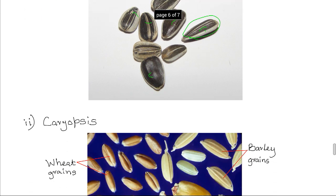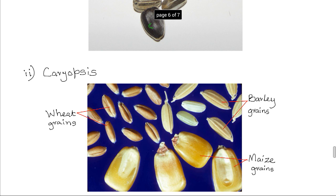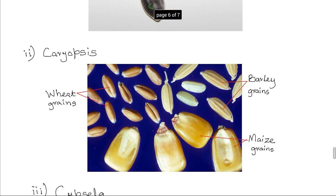Then the caryopsis. In the caryopsis there is also one seed, but the seed coat is fused to the pericarp. Examples include the maize grain, barley grains, and the wheat grains.